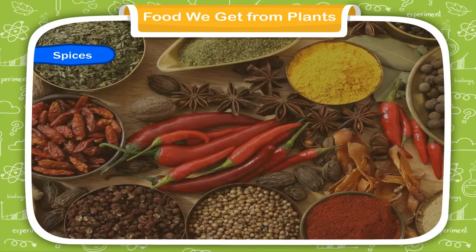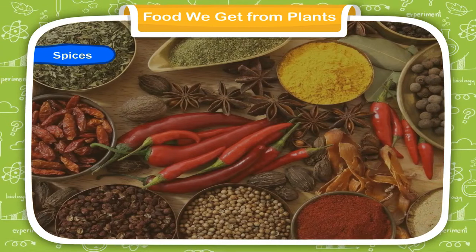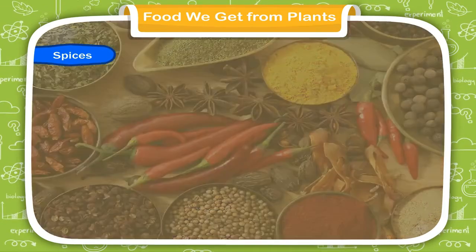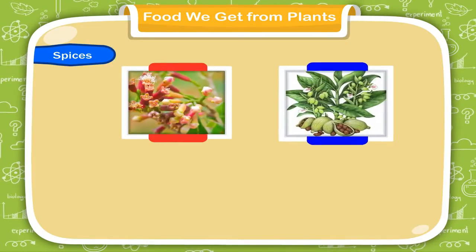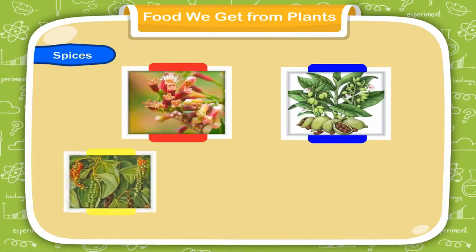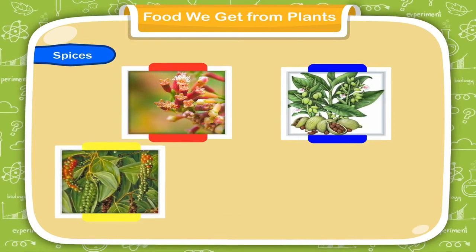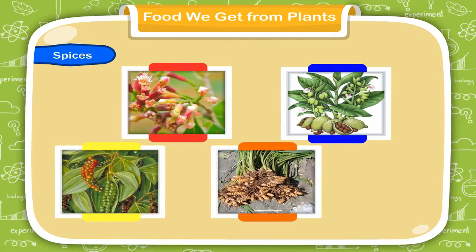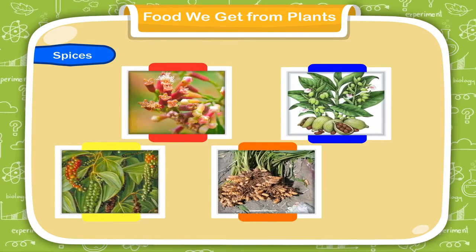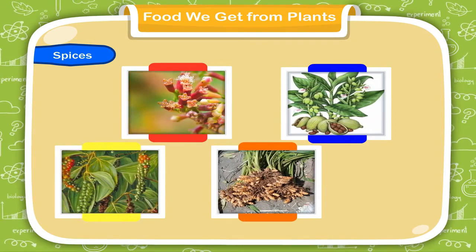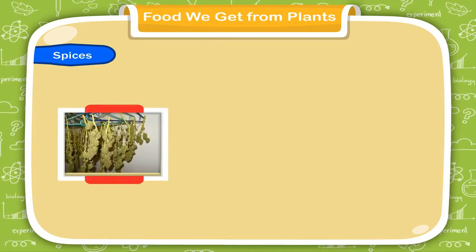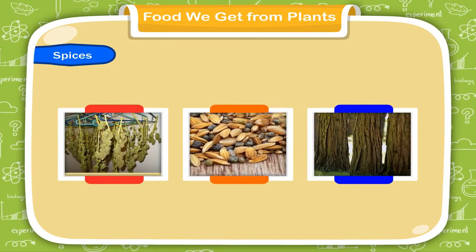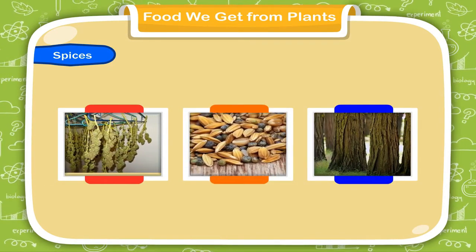Spices. We get spices from many plants such as cloves, cardamom, black pepper, turmeric, etc. Spices are obtained from the dried buds, seeds, bark of trees, etc.